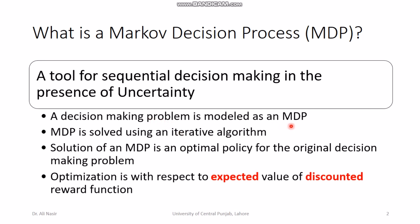The solution of a Markov process is an optimal policy for the original decision making problem. Optimization is with respect to the expected value of the discounted reward function. The expected value is the same concept from probability theory — a stochastic mean or average value. The discounted reward function accounts for whether we are getting reward right now or the reward is coming after some time.